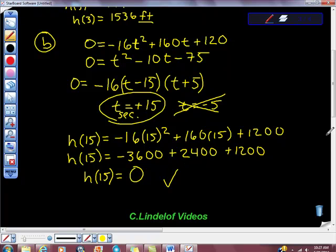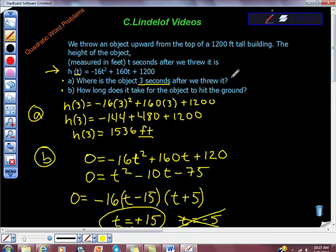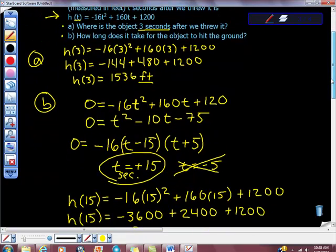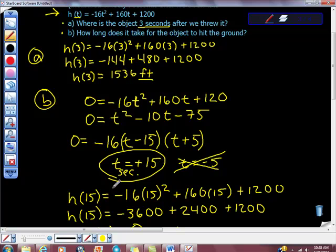So that worked. So we have, up here, we have A, where is the object after 3 seconds? 1536 feet. And B, how long does it take for the object to hit the ground or height of 0? And that would be at 15 seconds.